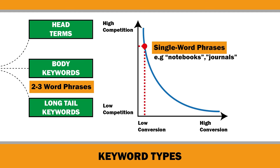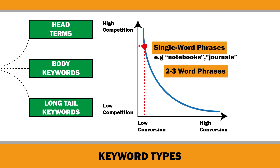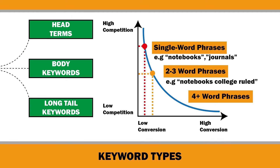Body keywords are two to three word phrases that get decent search volume but are more specific than head keywords. Examples of body keywords for KDP low content books include notebooks college ruled or notebooks for work. These keywords almost always have less competition than head terms. Long tail keywords are typically longer phrases that are more specific and less frequently searched. Examples include notebooks college ruled 8.5 by 11 and composition notebooks college ruled 8.5 by 11. Although these terms don't get a lot of search volume individually, they make up the majority of searches online when combined, and because they are less competitive and more specific, long tail keywords usually convert to sales better than other keyword types.